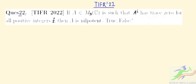This is question number 22. If A belongs to M3(C), the 3 by 3 matrices over the complex field, such that A^i has trace 0 for all positive integers i, then A is nilpotent. Is this statement true or false?